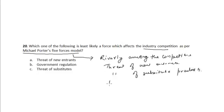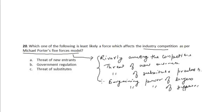Bargaining power of buyers and bargaining power of suppliers. These are the five forces as per Michael Porter's five forces model that affect industry competition.